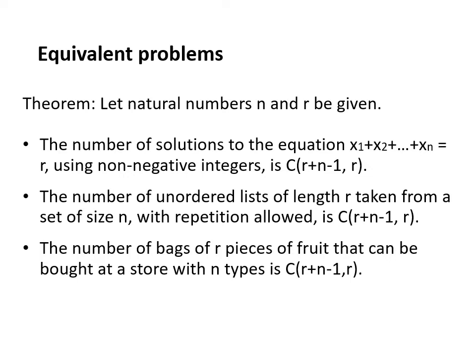Let's state this as a theorem. If natural numbers n and r are given, then all three of the following are equivalent — and their count equals C(r + n − 1, r): the number of non-negative integer solutions to x₁ + x₂ + ⋯ + xₙ = r; the number of unordered lists of length r taken from a set of size n with repetition allowed; and the number of bags of r pieces of fruit that can be bought at a store with n types.